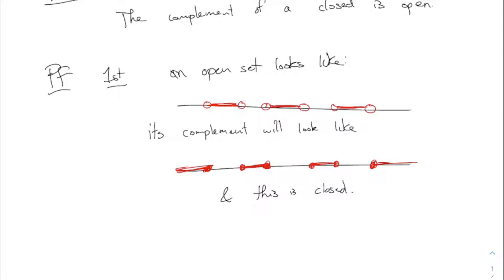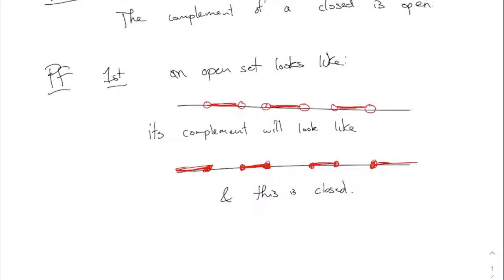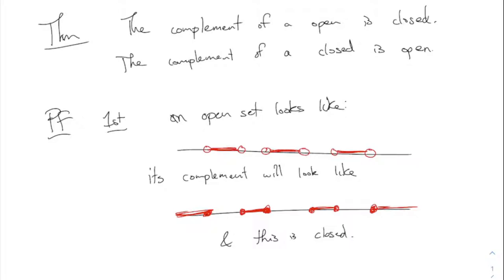The second one — the complement of a closed is open — is more involved, because closed sets can be kind of wild. Closed sets do not all look like intervals; they can look like other, weirder things. Actually, most of today's class we're going to talk about a particular very weird example of a closed set. So we have to get a little more technical in terms of the proof.